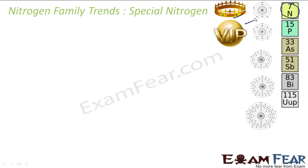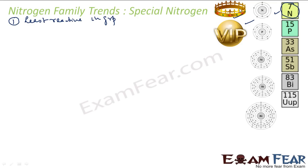The first speciality about Nitrogen is it is least reactive in the group — in the whole group, Nitrogen is the least reactive. And that's why we see a lot of abundant Nitrogen in the air. If anybody asks you whether Nitrogen is least reactive or most reactive, just think: so much Nitrogen is available in the air, and that proves Nitrogen has to be least reactive.